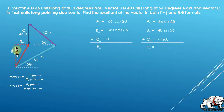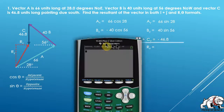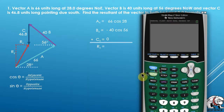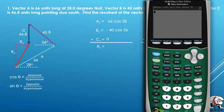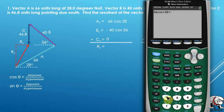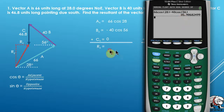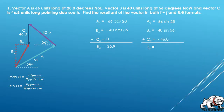Now we add these up and solve for Rx and Ry, the components of our resultant vector. On the calculator: 66 × cos(28) minus 40 × cos(56) plus zero gives us Rx = 35.9 units.